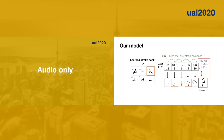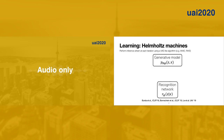Finally, we have a recognition model which takes in the image and outputs the stroke sequence. In our case, we use an LSTM whose input is the image embedding from a convolutional neural network. How do we learn the stroke bank, the prior LSTM, and the recognition model?